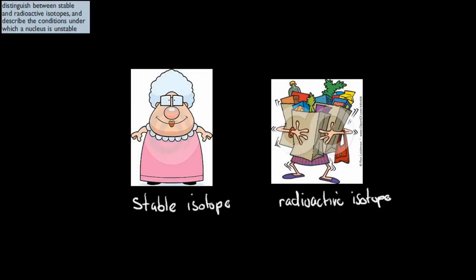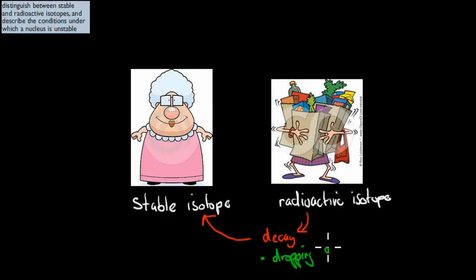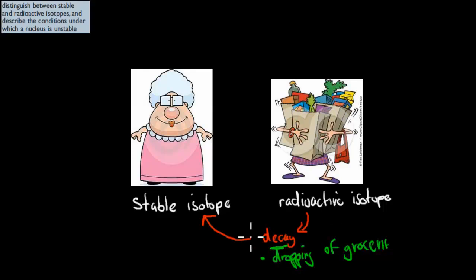If you imagine this old lady here, just in her natural state, carrying nothing, just being herself — this is the stable isotope. And if you give her lots of bags and she's carrying way too much, that's the radioactive isotope. What a radioactive isotope does over time is it decays. The reason why it decays is because it wants to go back to its normal stable state. You can imagine that the decaying part is the dropping of her bags — dropping of groceries — to get back to her stable state. The stable state is normal, the neutral one.